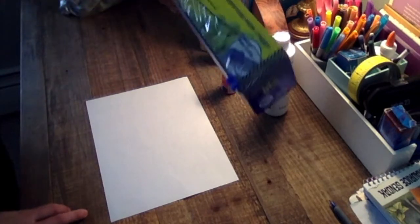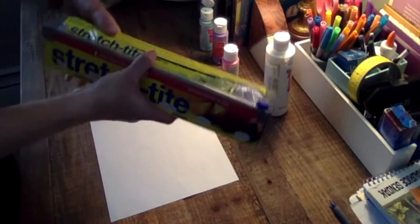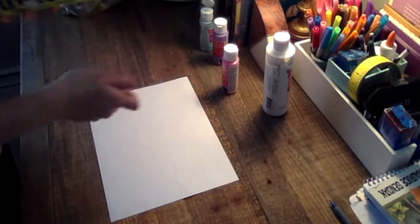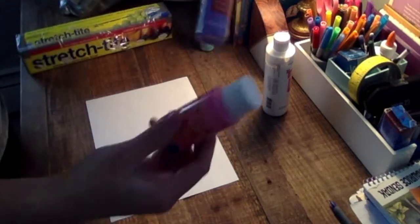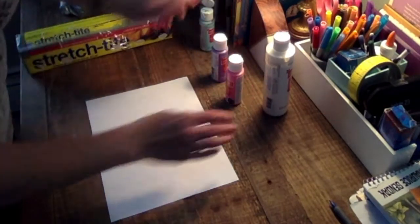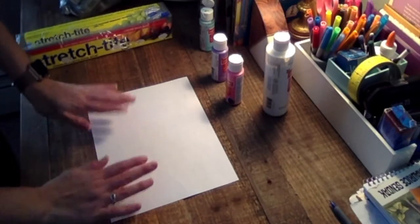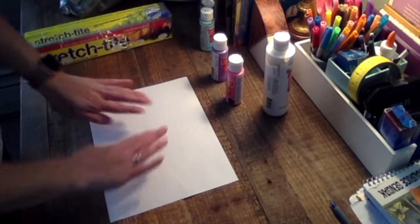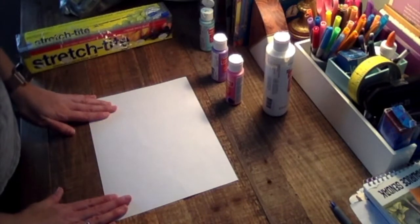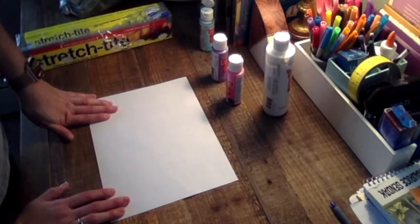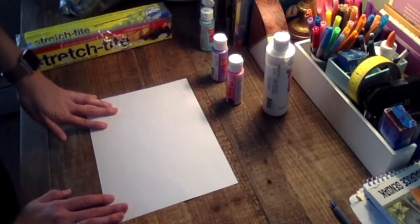What you're going to need is some stretch-tite or any sort of plastic wrap that you have from the kitchen, some paints, and a canvas. It could be paper, it could be cardboard, any sort of blank canvas for you to paint on. And you will not need any sort of paintbrushes or water or anything.